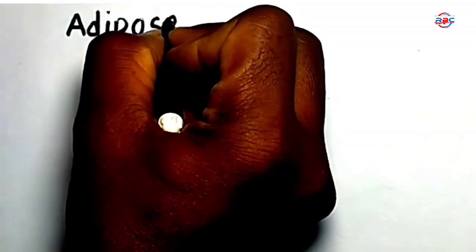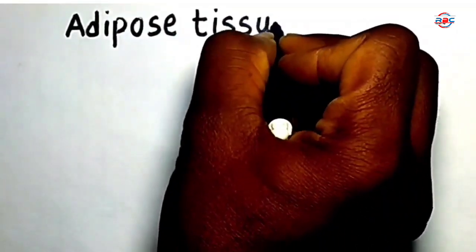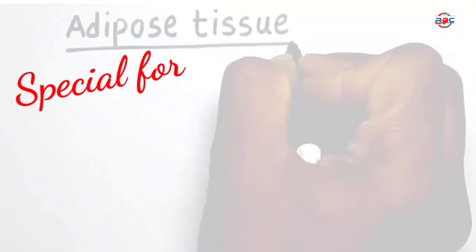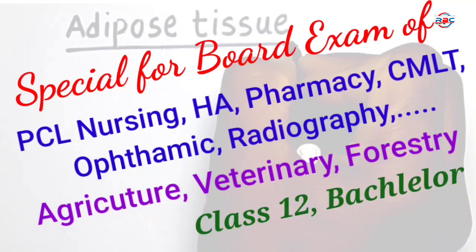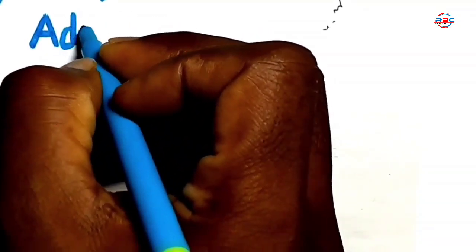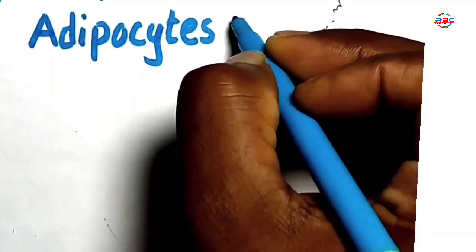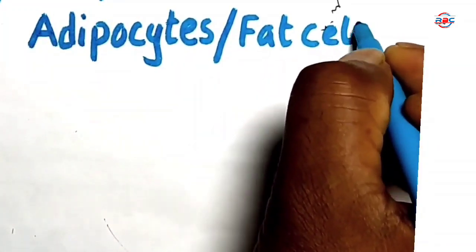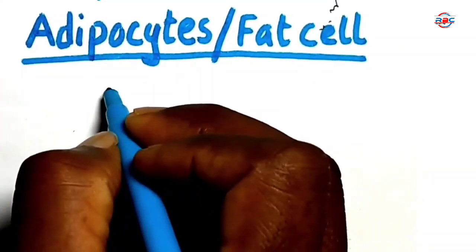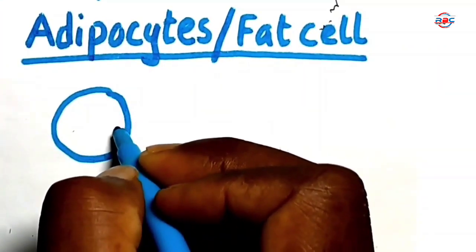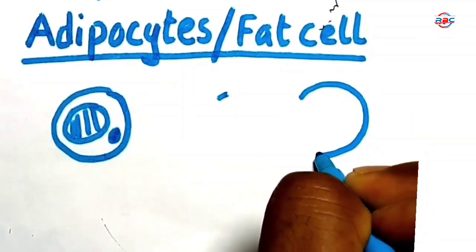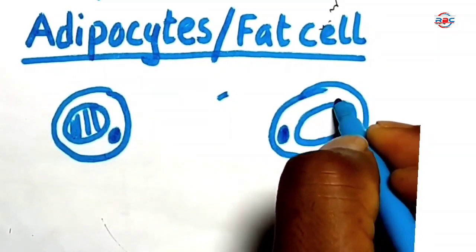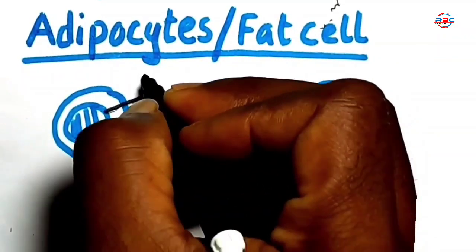Structure of Adipose Tissue. Before drawing the diagram of adipose tissue, we learn about the structure of adipose cells, or fat cells. The adipose cells are rounded or oval shaped cells with a peripheral nucleus and central fat globules. This is called fat globules.